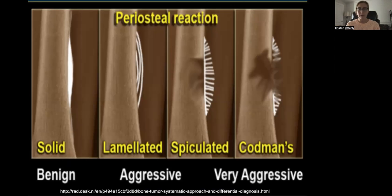Another important feature is something called periosteal reaction. Periosteal reaction can be normal in some pathology, such as stress fractures or fractures when the bone starts to lamellate and grow back. A solid and lamellated periosteal reaction could be an indication of something benign, whereas when associated with an obvious lesion and showing something like a Codman triangle, periosteal reaction is indicative of something malignant — as seen in Ewing sarcoma and osteosarcoma.